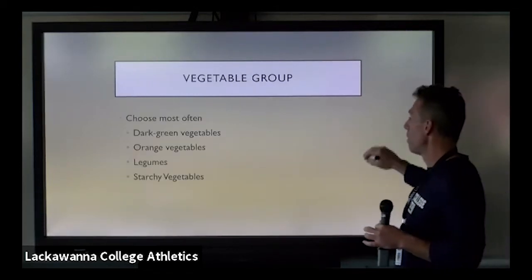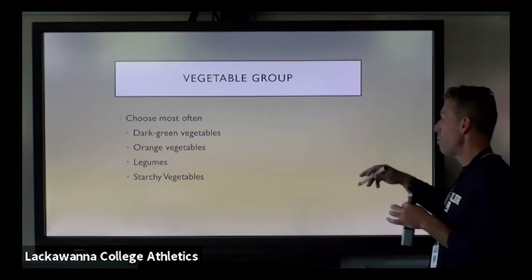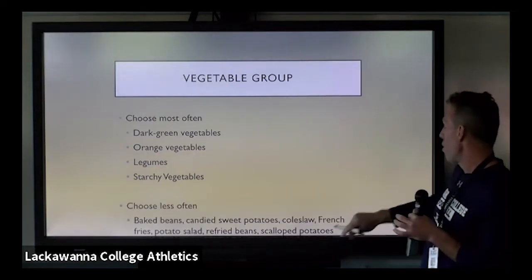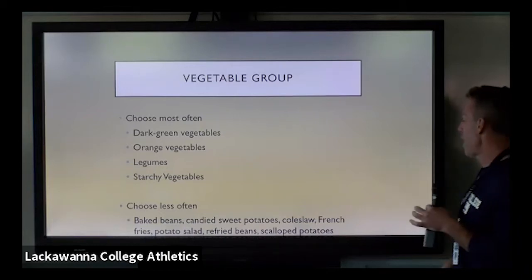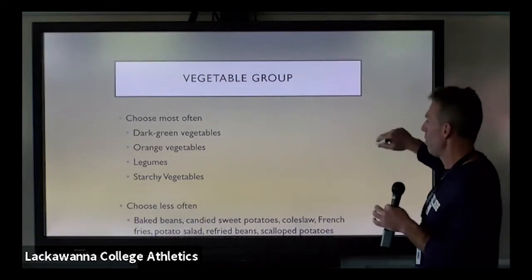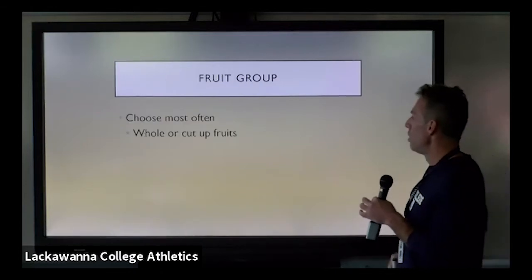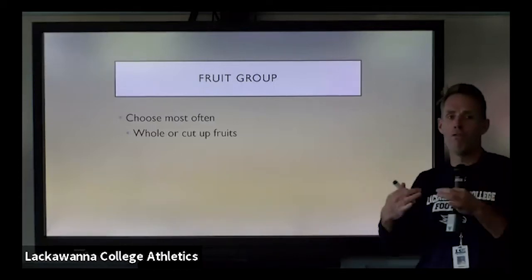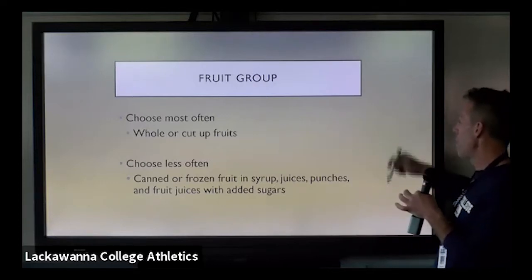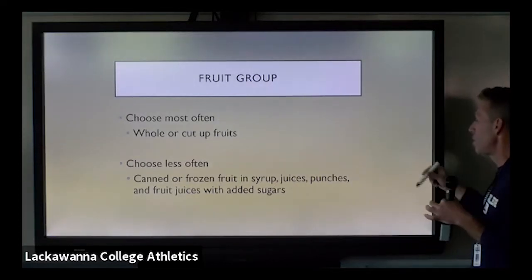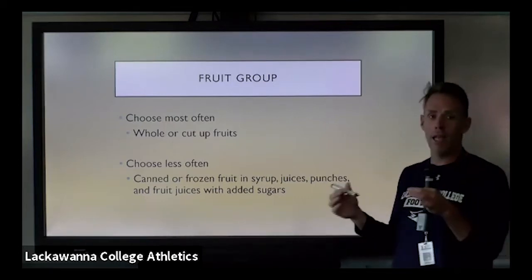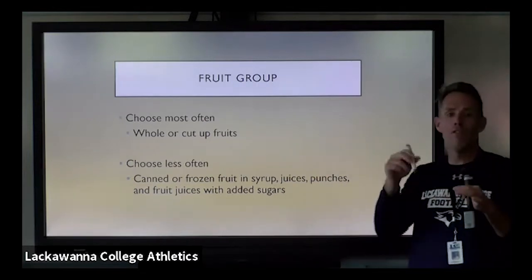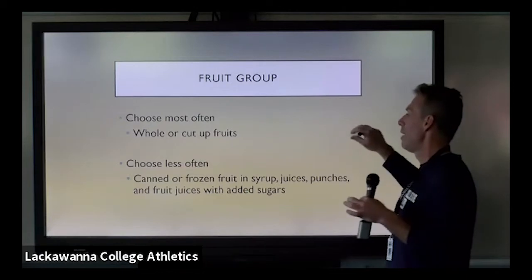In the vegetable group, choose most often dark green vegetables, orange vegetables, legumes, and starchy vegetables like potatoes. Choose less often french fries, potato salad, scalloped potatoes, and baked beans. In the fruit group, choose most often whole or cut-up fruits — go to the produce section and buy your own fruit. Choose less often canned or frozen fruits in syrup, juices, and fruit drinks with added sugars. We want to stay away from added sugar, so if you're going to eat fruit, take an extra five minutes, clean it, cut it up, and eat it.